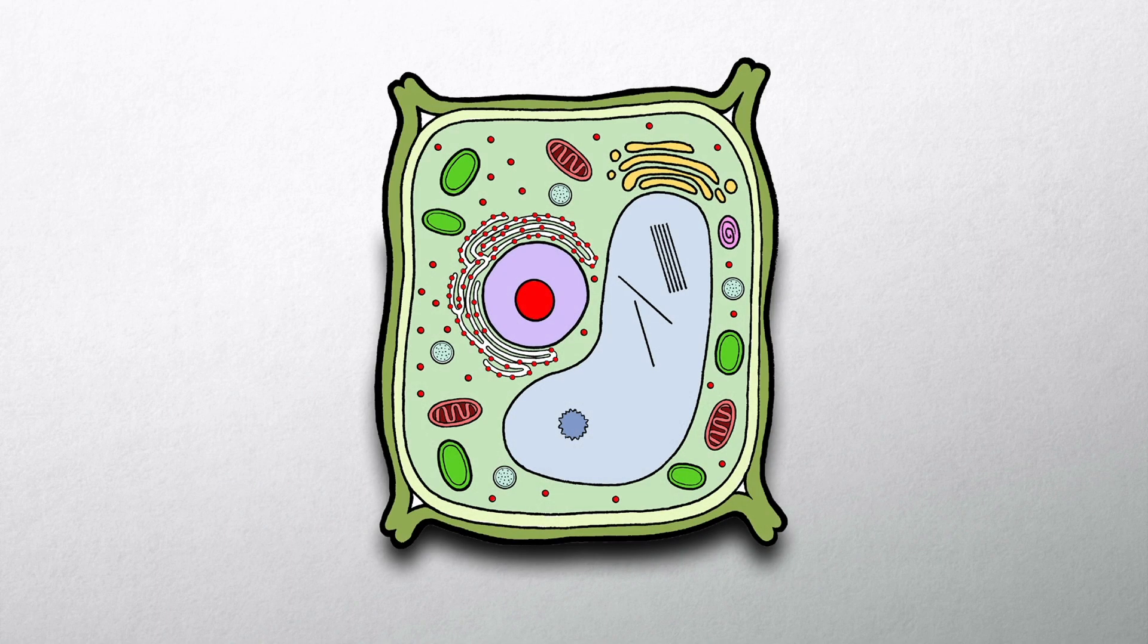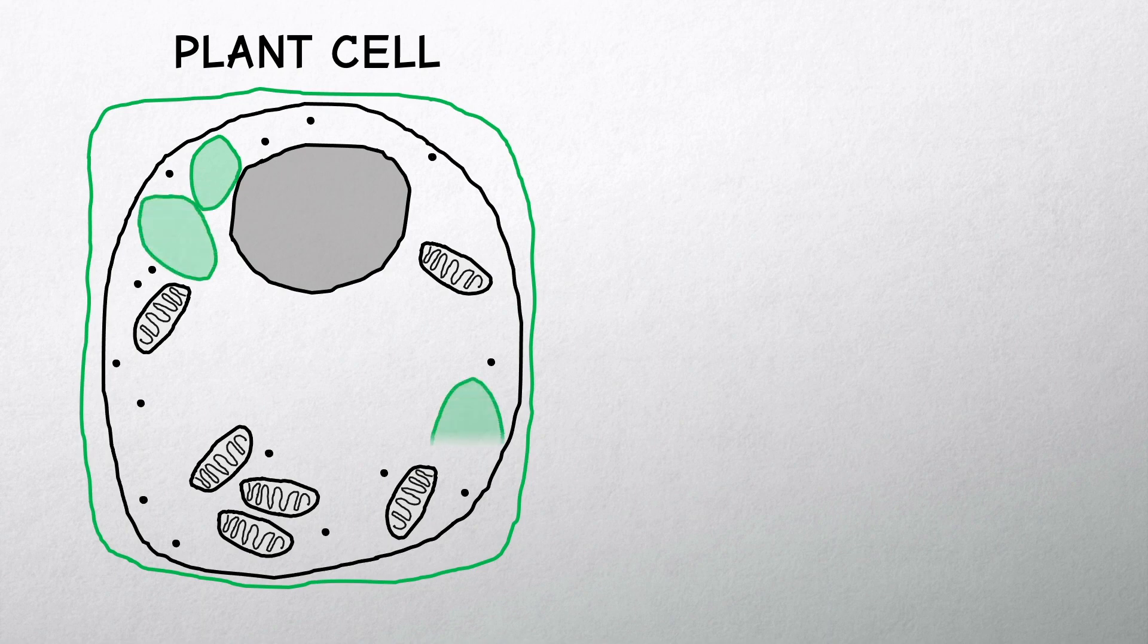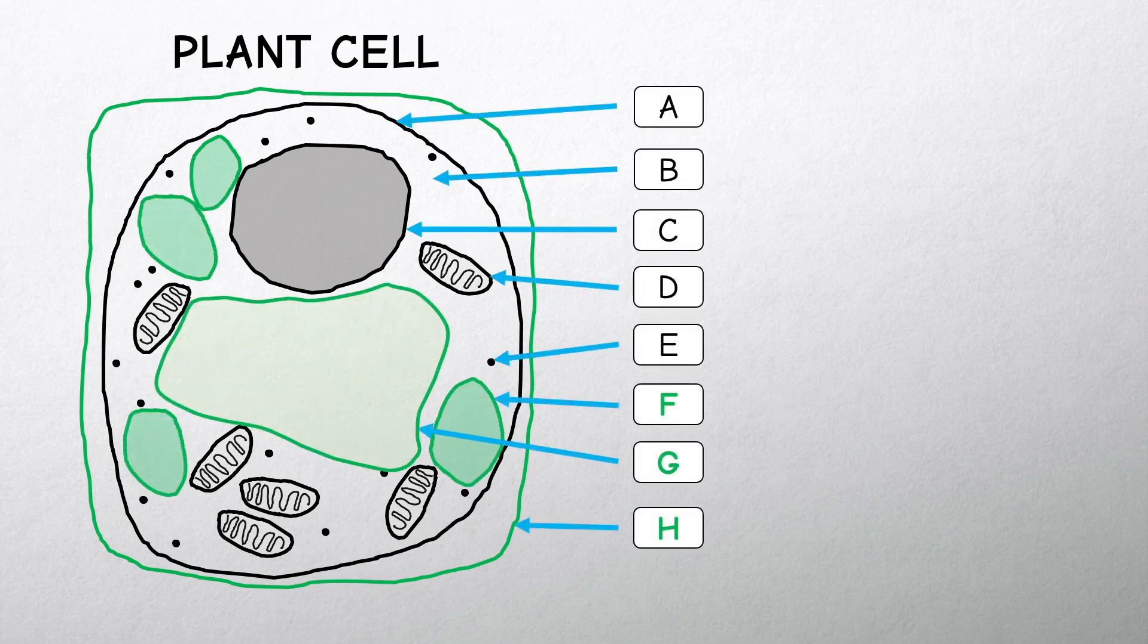Like animal cells, plant cells are complex structures made up of many different parts or organelles, but we are just going to focus on a few.